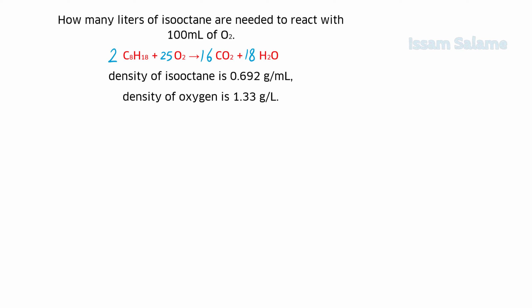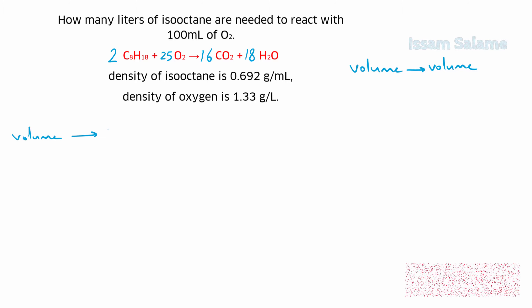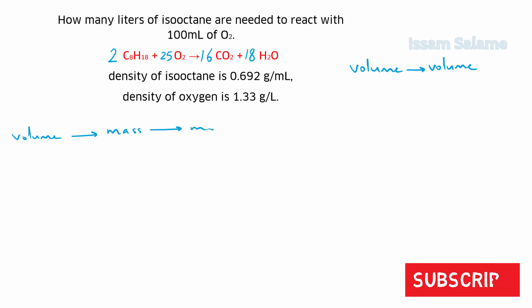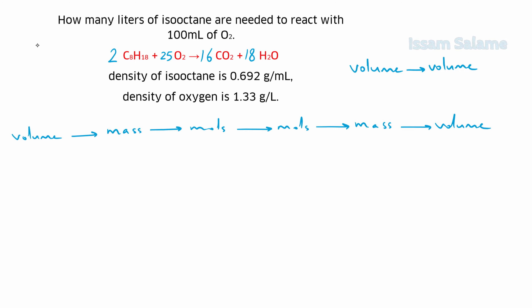Since the known quantity is in volume and the unknown quantity is also in volume, this is a stoichiometry volume-volume exercise. The procedure is: convert volume to mass, mass to moles, moles to moles, moles to mass, and mass to volume. We start with the given, which is 100 milliliters of oxygen.